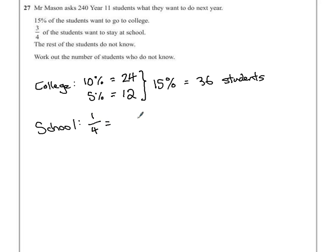So one quarter of 240 is the same as a quarter of 24. So a quarter of 24 is 6, so therefore it must be 60.